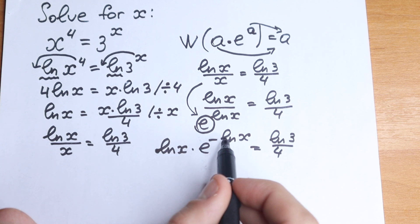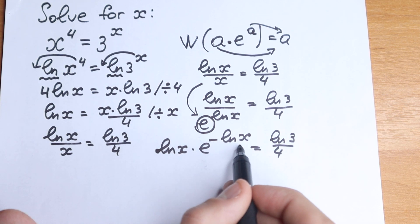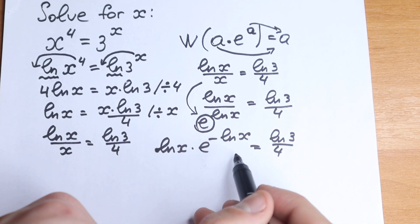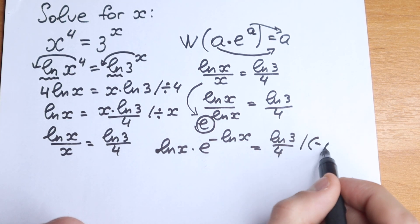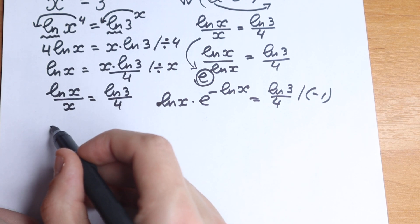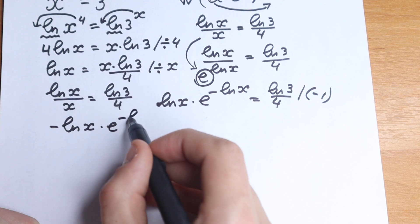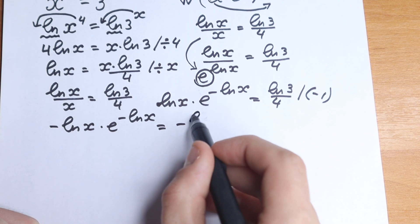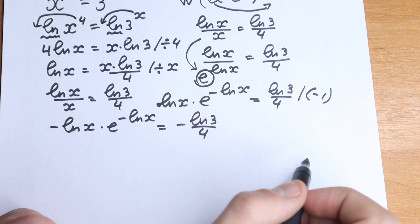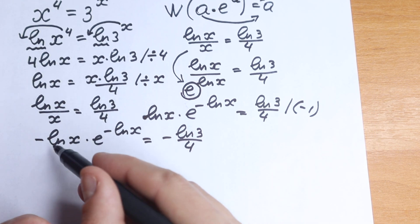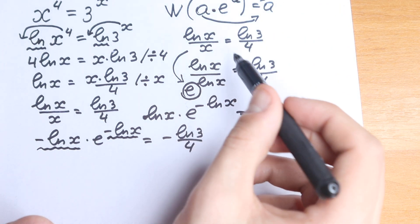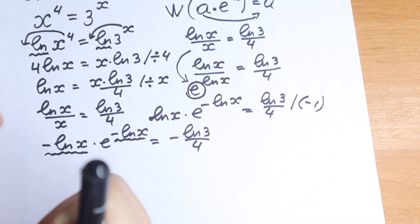Look closely. We have e, and we need the same expression in both the base and the exponent position for Lambert W. Right now we have minus natural log x in the exponent but positive natural log x in front — they need to match. So let's multiply both sides by minus 1. We get minus natural log x times e to the power minus natural log x equal to minus natural log 3 over 4. Now both instances are minus natural log x — this matches the Lambert W form perfectly.